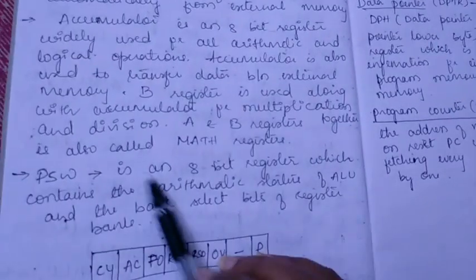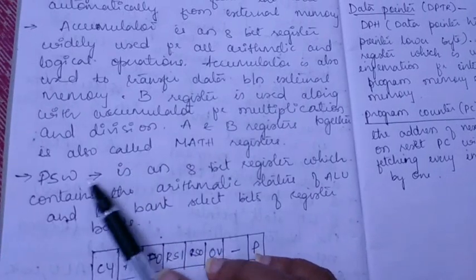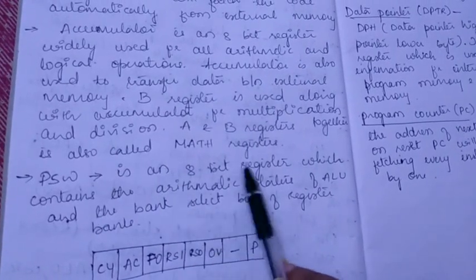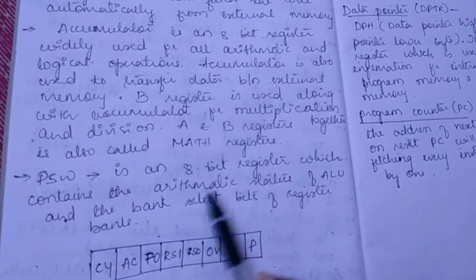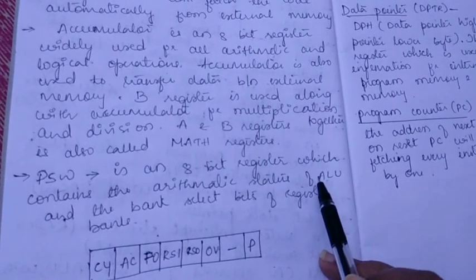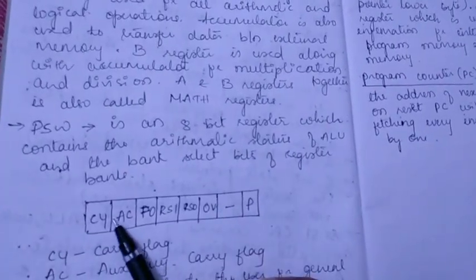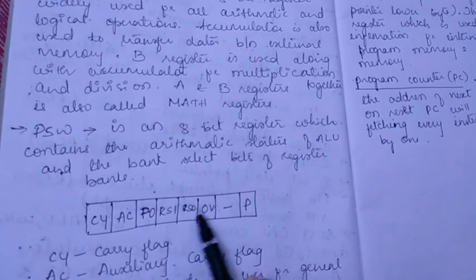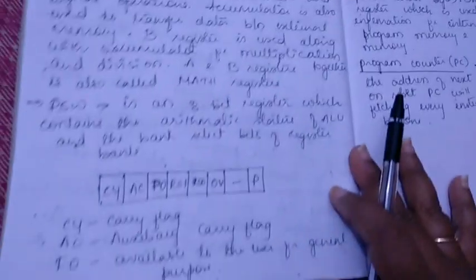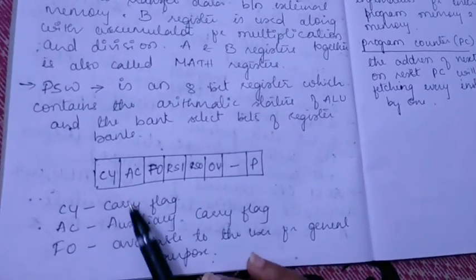The next point: PSW is an 8-bit register which contains the arithmetic status of arithmetic logic unit and the bank select bits of register banks. So here it is 8-bit: 1, 2, 3, 4, 5, 6, 7, 8. This bit CY will give you a carry flag.